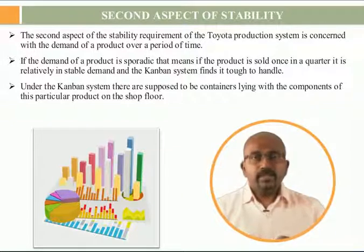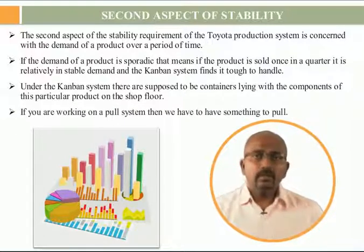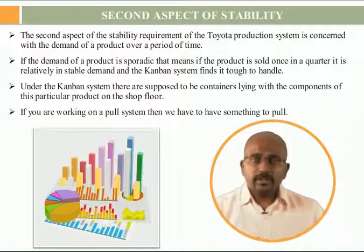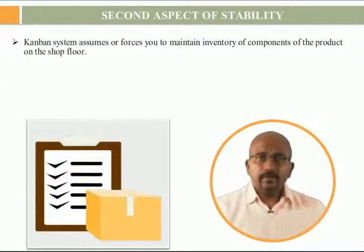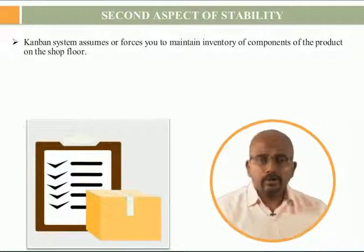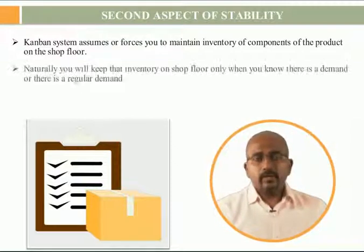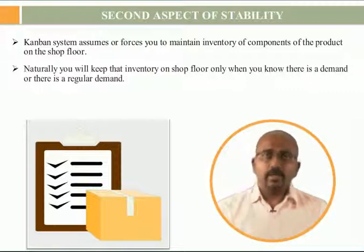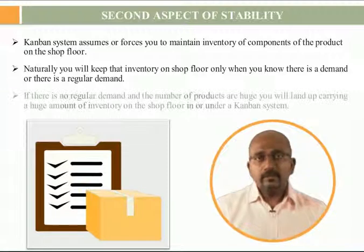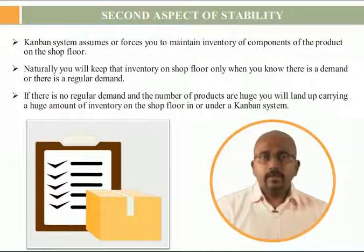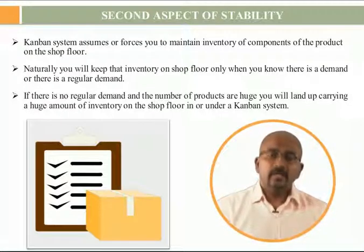This is what we experience when people say there has to be something to pull. If you are working on a pull system, we have to have something to pull. If no component is available for a machine or product to be made, naturally what are you going to pull? So the Kanban system forces you to maintain inventory of product components on the shop floor. You will keep that inventory only when there is regular demand. If demand is irregular and the number of products is huge, you will end up carrying a huge amount of inventory on the shop floor under a Kanban system.